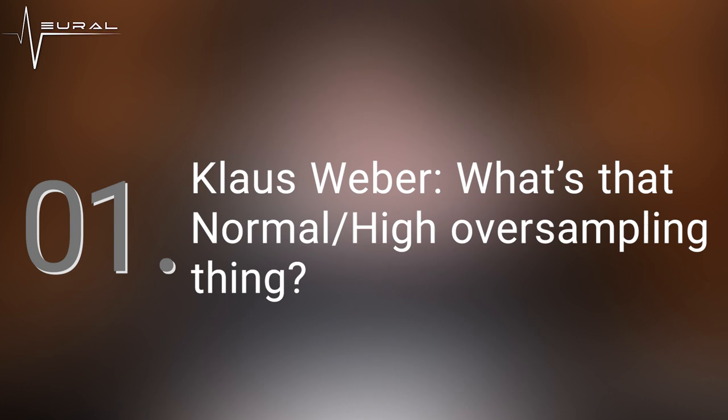Question one comes from Klaus Weber. He asks: what's that normal/high oversampling thing? Oversampling is how Neural DSP plugins deal with aliasing. I'm not going to get too deep into the Shannon-Nyquist sampling theorem, so I'll keep things simple and brief. When distortion is added to a signal, harmonics are created higher up in the frequency spectrum. If the sample rate isn't high enough to properly represent them, they'll be folded back into lower frequencies.